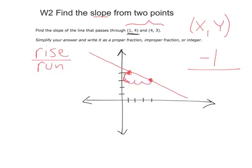1, 2, 3. And once again, I have my slope of negative 1 third.